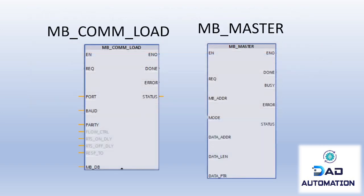In TIA Portal, to initiate a Modbus communication system two main functions must be called. The first is Modbus_Comm_Load, the initiating function to start the Modbus communication where port address, bit transfer rate, and parity options are set. The PLC can act as either master or slave in a Modbus network, but in this example the PLC acts as master, so the second function, Modbus_Master, is called to configure the PLC as the master device.